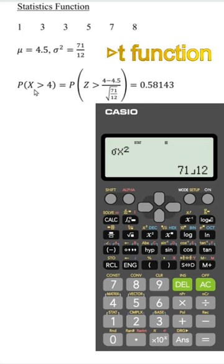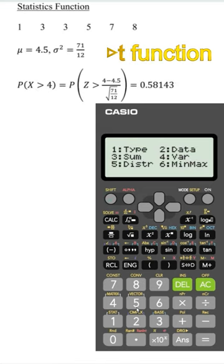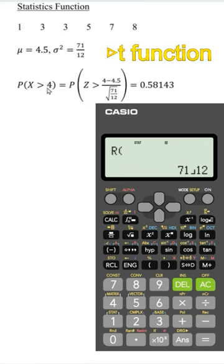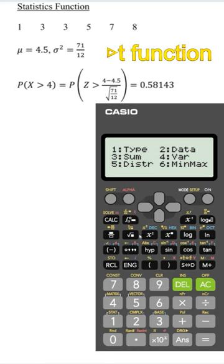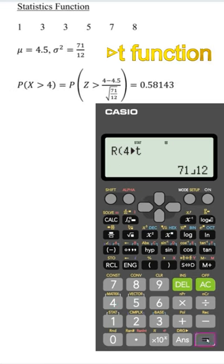To obtain the probability for the random number more than 4, press shift 1, select 5 for distribution. Since it's to the right, we choose 3, and we have the number 4. Press shift 1, distribution 5, select 4 to standardize the value. Press equal and we shall obtain the correct probability.